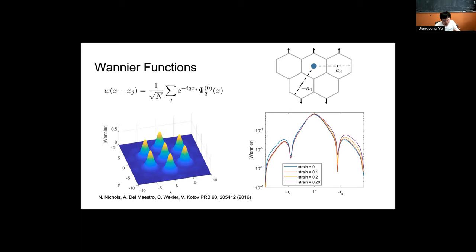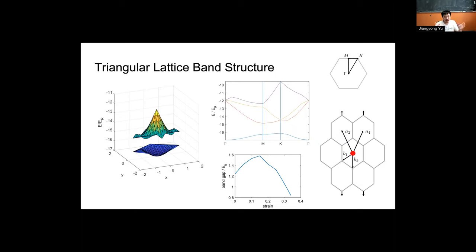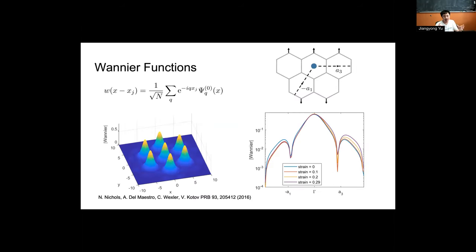Now we have the Bloch waves. However, what we have is essentially periodic solutions. They don't represent a single atom particularly well. So what we need for that is Wannier functions.